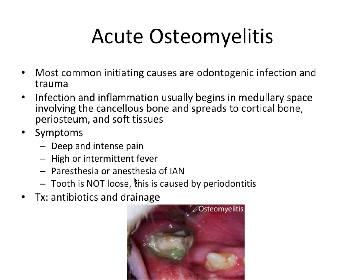Additional symptoms include paresthesia or anesthesia of the inferior alveolar nerve. Notably, tooth mobility in this context is caused by periodontitis, not by the osteomyelitis itself — this is something exam makers like to catch you on. Acute osteomyelitis does not cause tooth mobility; that's caused by periodontal disease resulting in loss of clinical attachment. Treatment includes antibiotics due to systemic involvement, and drainage to clear out the infection.